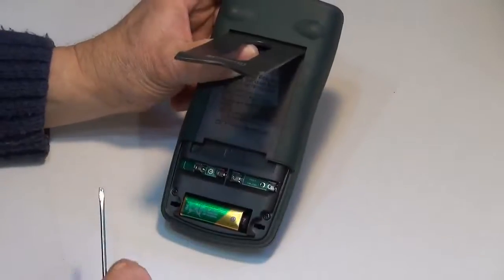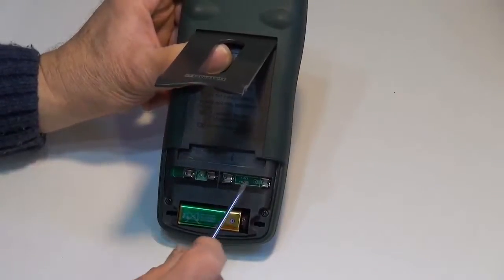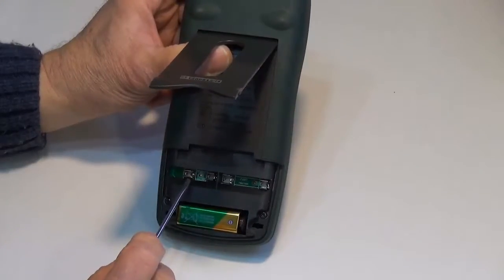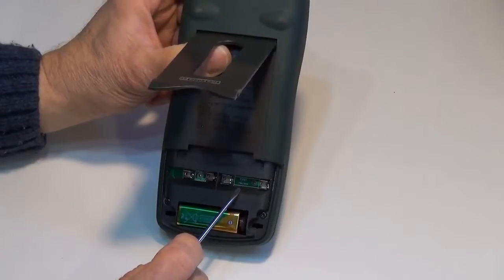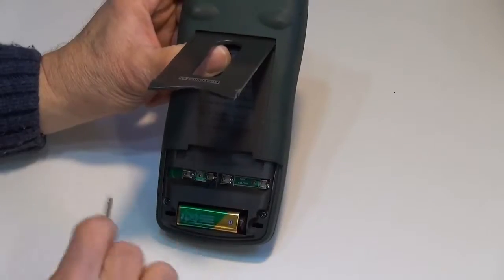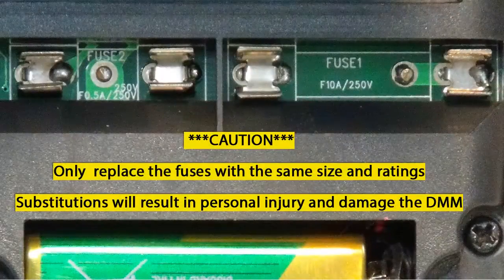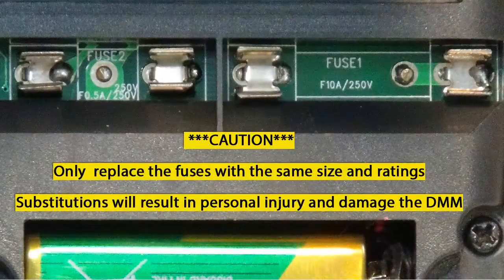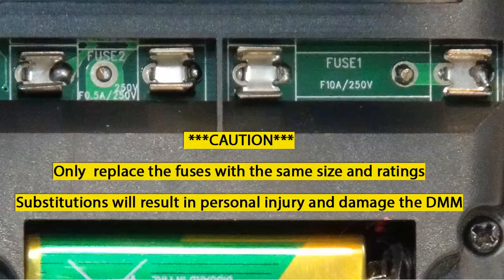And if we take a look inside it tells us what the fuse sizes are. So this little fuse is a half amp fuse rated at 250 volts. The bigger fuse is a 10 amp fuse rated at 250 volts. To prevent possible personal injury and damage to the digital multimeter only replace the fuses with the same physical size and ratings.